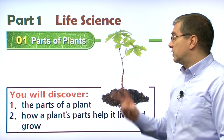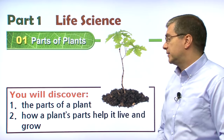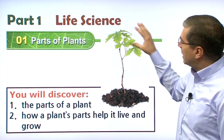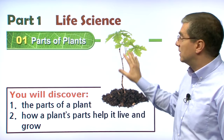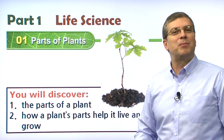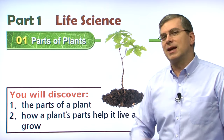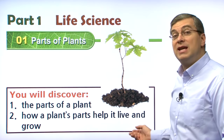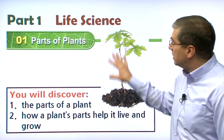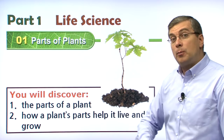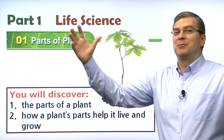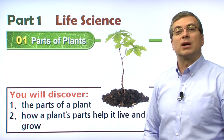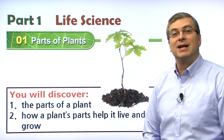Today we will discover two things in our lesson. The first is the parts of a plant. Right here is a nice picture of a plant. We can see that there are different parts to this plant. The second thing you will discover is how a plant's parts help it to live and grow — how these parts help it grow into a very big, mature plant that we can use. We're going to find out these two things in this lesson, so let's get started.